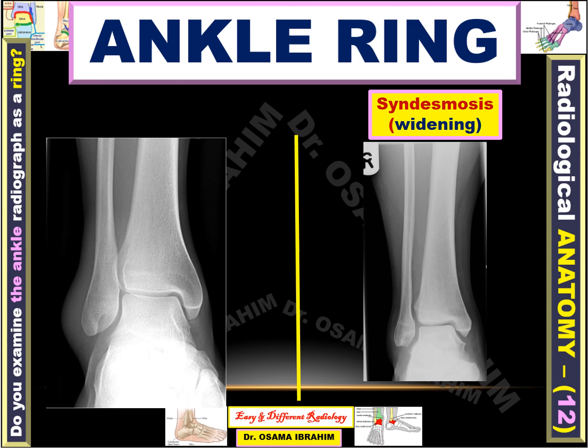Again, this is the mortise AP position, and the fibula is not overlapping the talus bone, so this is a normal mortise position. This other example also shows the fibula not covering or overlapping the talus, so this is also good X-ray positioning.